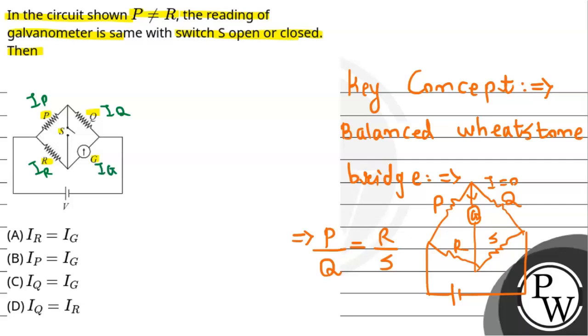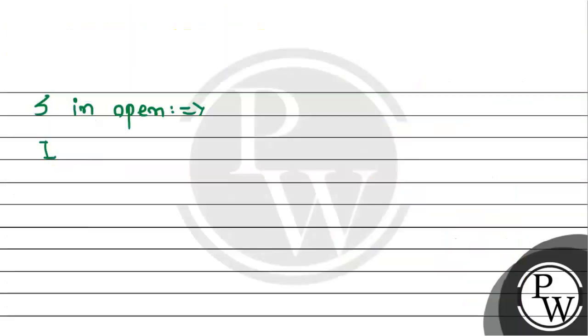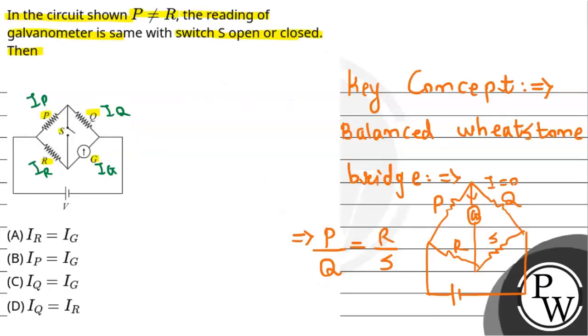the current IR must equal IG, and the current IP must equal IQ. That is, the current through R equals the current through G, and the current through P equals the current through Q.